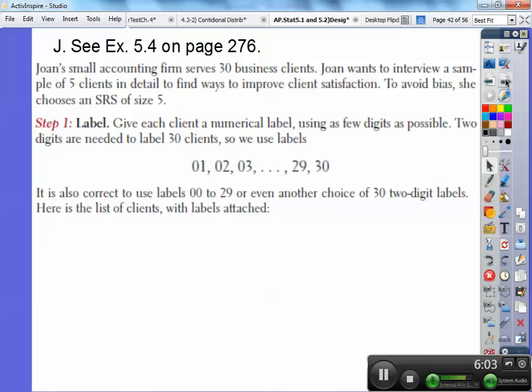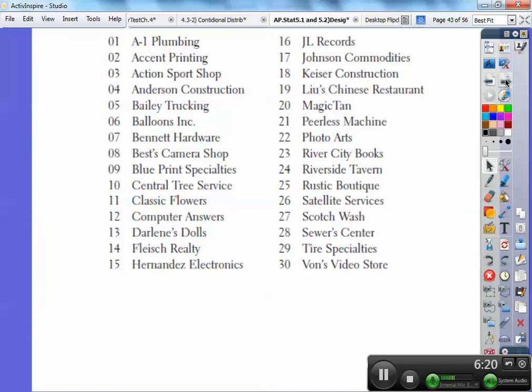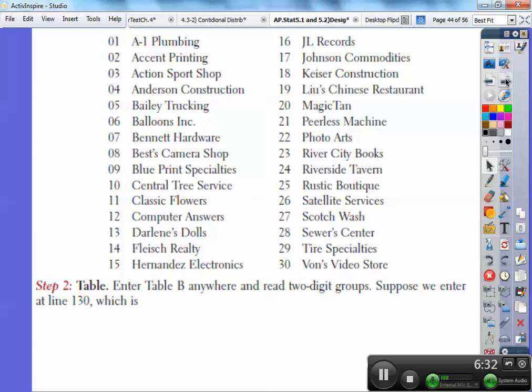So, it is also correct to use the label 00 to 29. That's 30 digits. Or you can even choose, say, 30 all the way up to 59. So, here's a list of the clients with the labels attached. She has all these different clients from 01 being A1 Plumbing to 30 being Vaughn's Video Store. Boy, they hardly have video stores anymore with our Netflix and stuff. So, step two is to enter Table B anywhere, anywhere you want, and read two-digit groups.